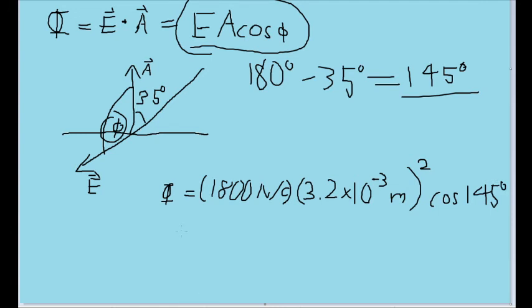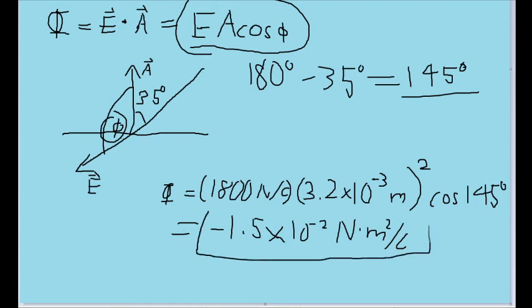Now, if you plug this into your calculator, then you get an electric flux of negative 1.5 times 10 to the negative 2 newton meters squared per coulomb. And this should be the final answer here.